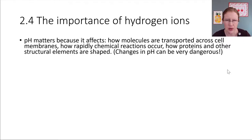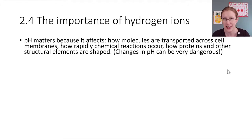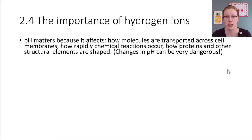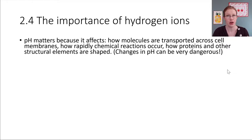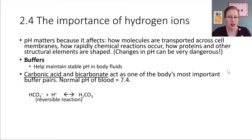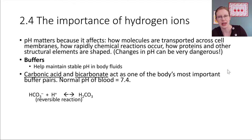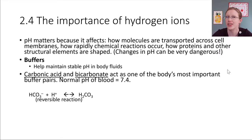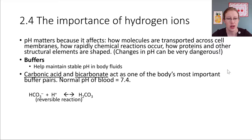If the pH of the body is not kept constant — remember homeostasis — if homeostasis is not maintained, then there are going to be all sorts of things that just can't take place the way they're supposed to in the human body. One of the ways our bodies maintain pH at a very consistent level is through the use of buffers. Buffers are things that help maintain a stable pH value by absorbing extra hydrogen ions or donating hydrogen ions as needed.